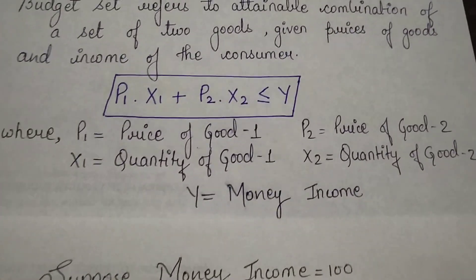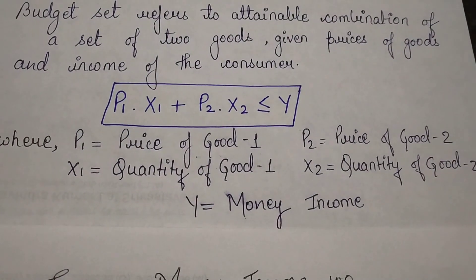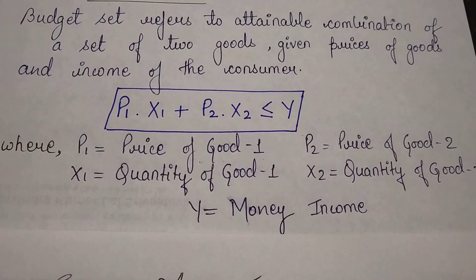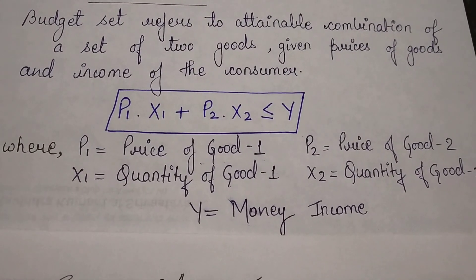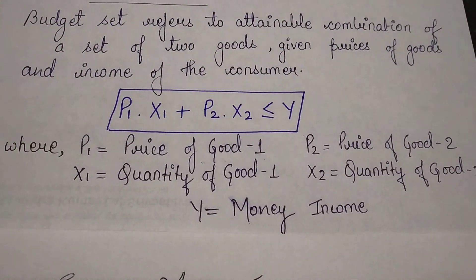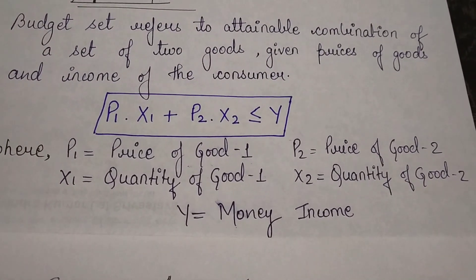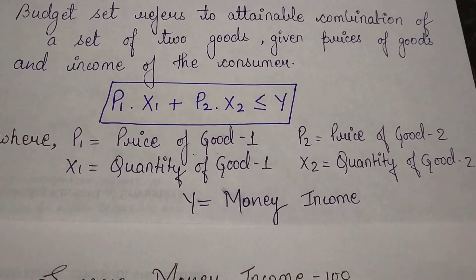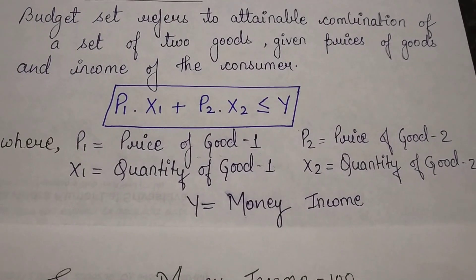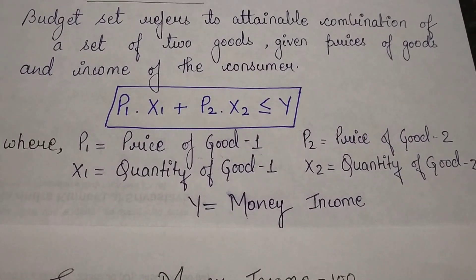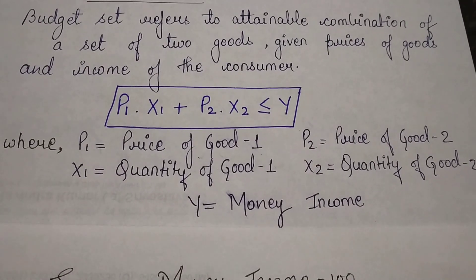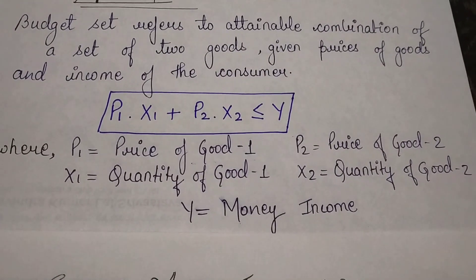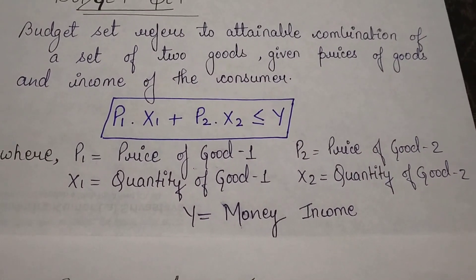Now look at the equation: p1 into x1 plus p2 into x2, where p1 is price of good one, x1 is quantity of good one, p2 is price of good two, x2 is quantity of good two, and y is money income. So for our two commodities - cold drink and pizza - the total amount spent on both, when added, should be less than or equal to the money income, not more than that.